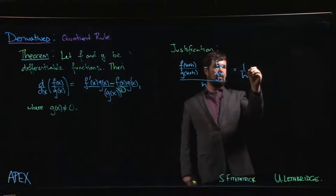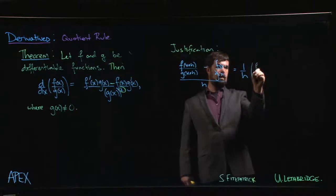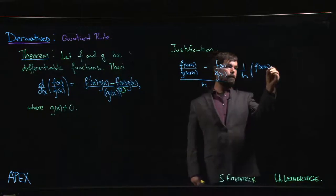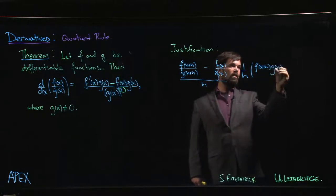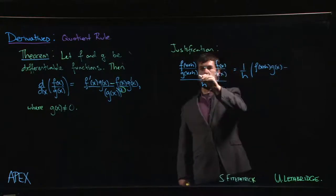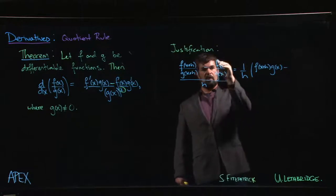1 over h - let's just put that out front. We have f at x plus h times g of x. We multiply top and bottom here by g of x. Over here we multiply top and